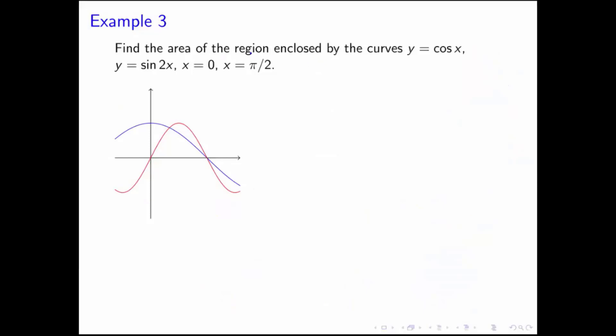Here we're interested in finding the area between two trig functions, adding a little variety to the types of curves we'll be looking at. We want to find the area enclosed by the curves y equals cosine x, y equals sine x, x equals 0, and x equals pi over 2.